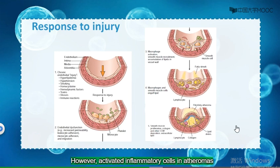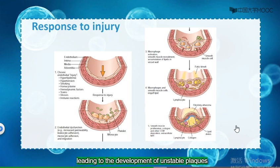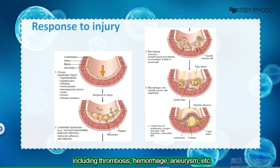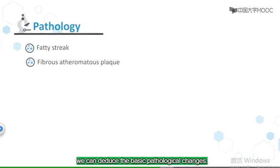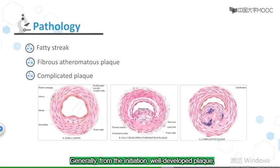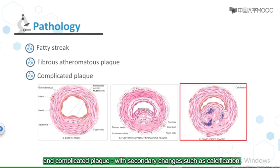However, activated inflammatory cells in atheromas can also induce intimal smooth muscle cell apoptosis and breakdown of matrix, leading to the development of unstable plaques and complicated morphological changes including thrombosis, hemorrhage, and aneurysm. Based on the above-mentioned pathogenesis, we can deduce the basic pathological changes. Generally, from initiation to a well-developed plaque to an unstable plaque, it experiences three steps: fatty streak and foam cells; fibroatheromatous plaque, the well-developed plaque; and complicated plaque, with secondary changes such as calcification.